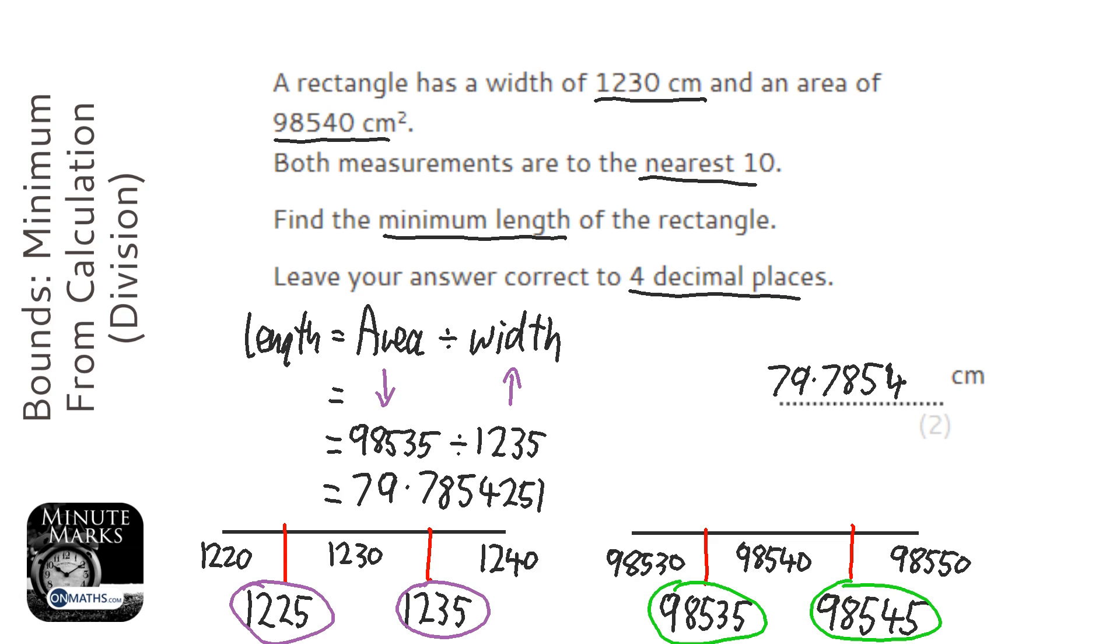So for adding and multiplying, it's nice and easy. If you're looking for the upper bound of the answer, just pick both upper bounds. But for dividing and subtracting, it's slightly different. The second thing has to be kind of the opposite. So if you're looking for the lower bound, the first one is going to be the lower bound, and the second one will be the upper bound.